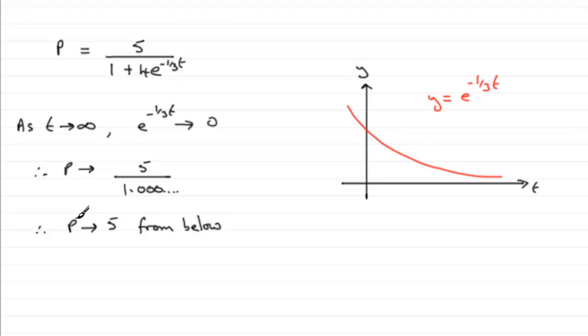So, since P is measured in thousands, then we've got that therefore the population of meerkats never can exceed five thousand. So, if we just summarize that, it never exceeds five thousand.